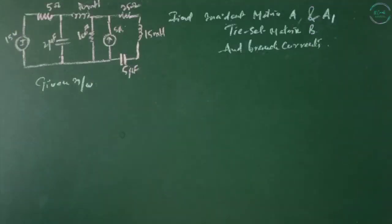Let us solve a problem. This is the given method. We need to find out the incident matrix A and reduced incident matrix A dash and tie-set matrix B for the branch currents.